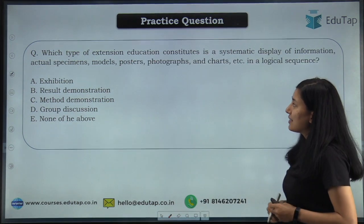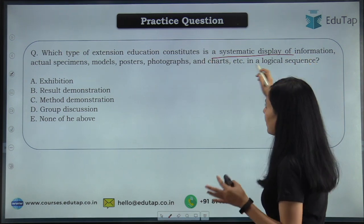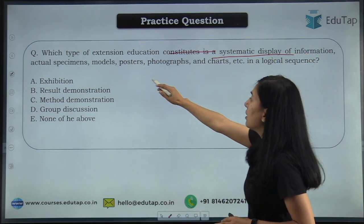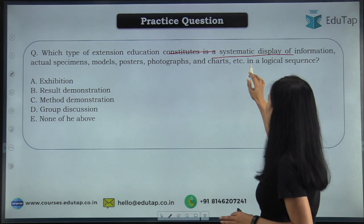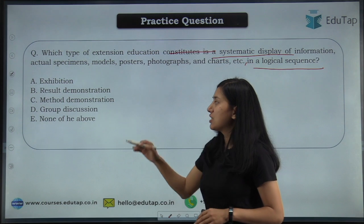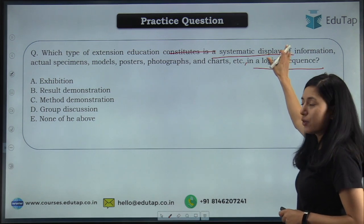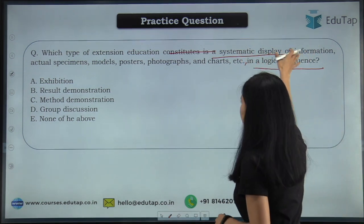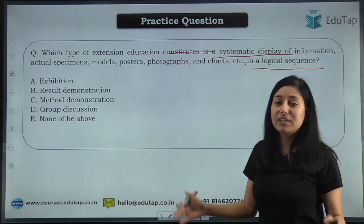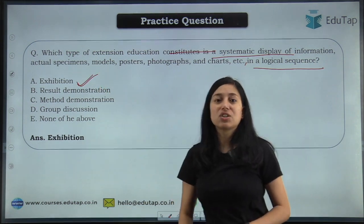Moving on to the next: which type of extension education is a systematic display of information, actual specimen, models, posters, photographs, and charts in a logical sequence? Options are exhibition, result demonstration, method demonstration, group discussion, none of the above. Whenever we are displaying information through actual specimens, models, posters, photographs, and charts to the farmer — that is your exhibition. So that method is your exhibition method.